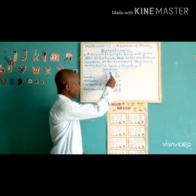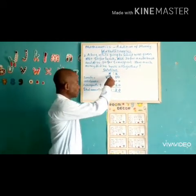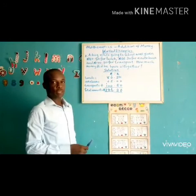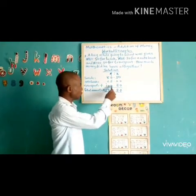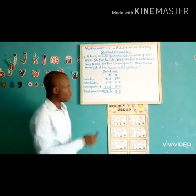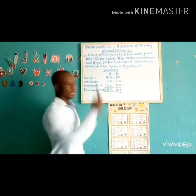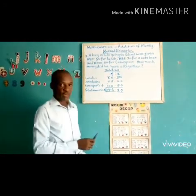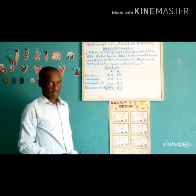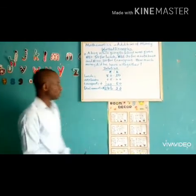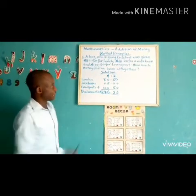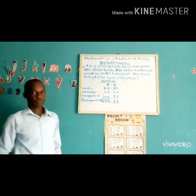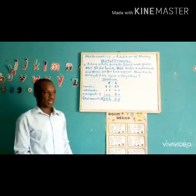The numbers you carry must not be thrown away. While adding the numbers in each column, you must add everything together, because that carried figure is very, very important. If you carry it away, you won't have the correct answer, so you have to be mindful of that. The total amount the boy has is 246 naira 20 kobo. Now we are moving on to our class work.